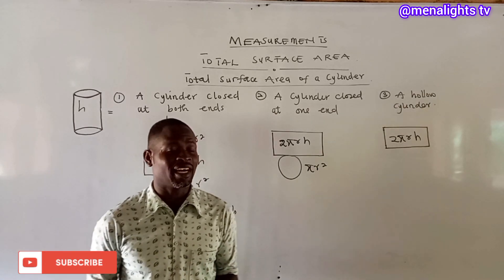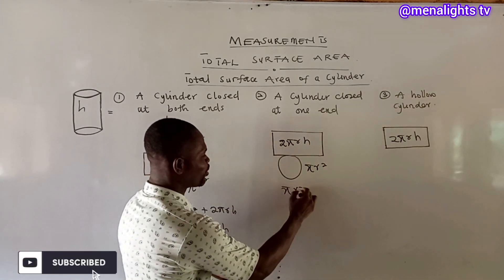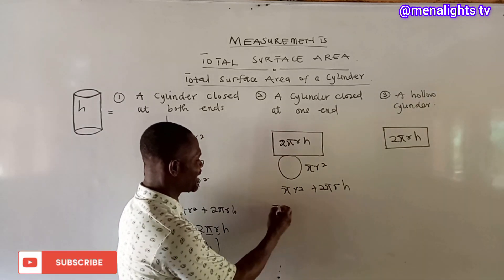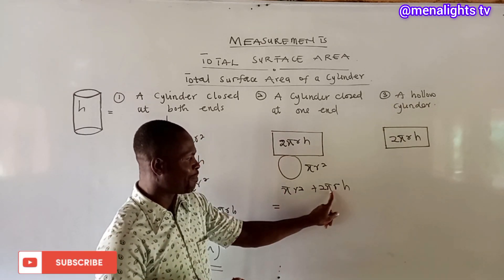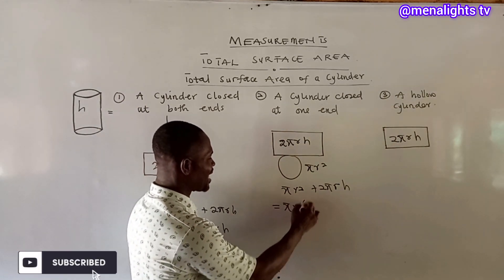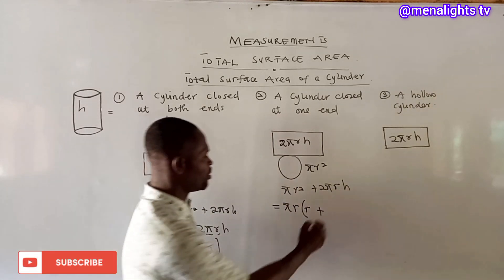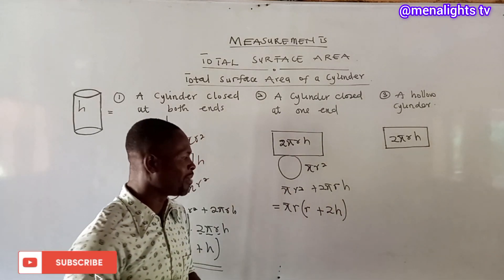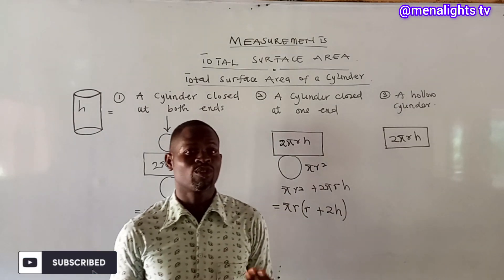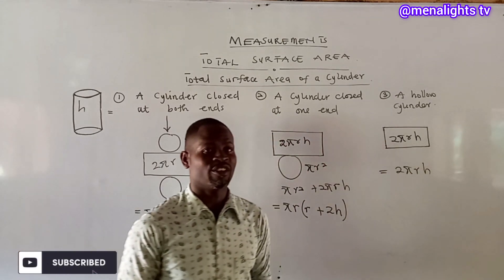This is the formula for finding the total surface area of a cylinder closed at one end: πr² + 2πrh. We factorize by taking πr out, giving πr(r + 2h). For a hollow cylinder, which is open at both ends, the formula is simply 2πrh.